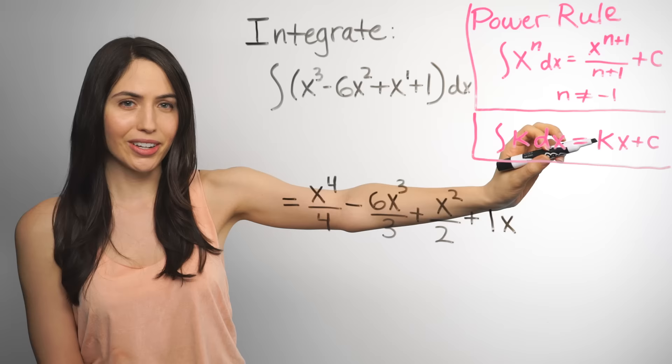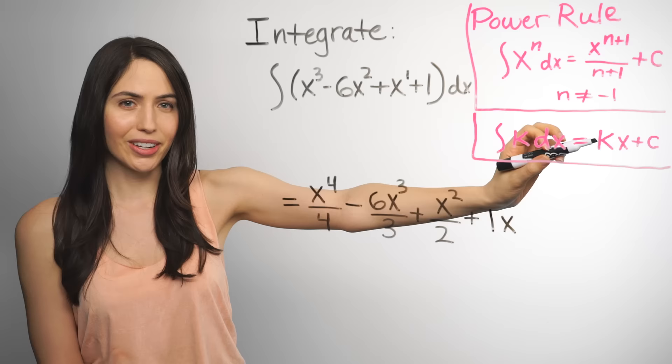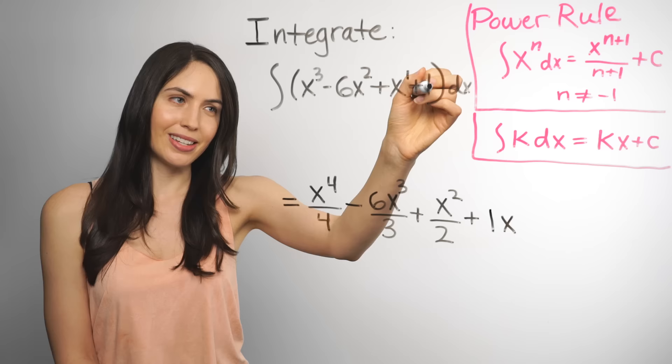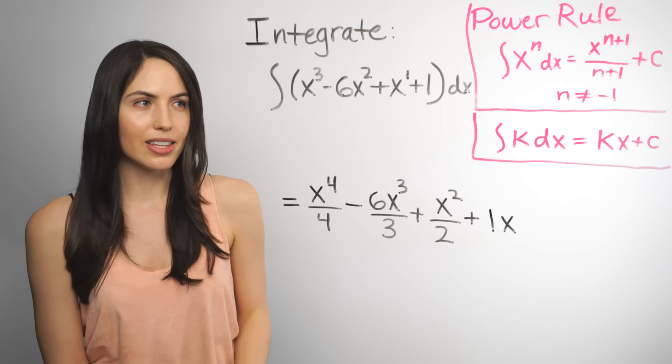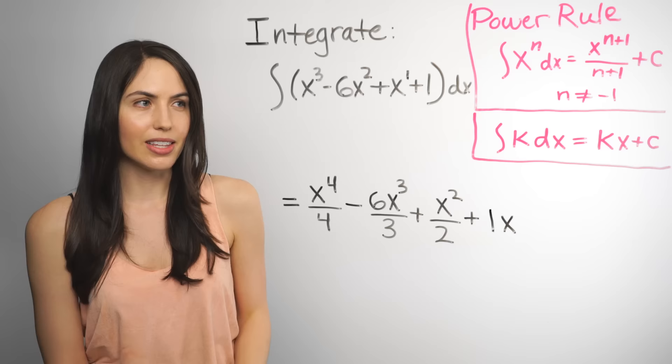And some people think of this as a separate rule, the constant rule. And other people think of it as the power rule. There is technically an invisible x to the zero power here. So if you use the power rule on x to the zero, you get x to the 1 over 1. Any way you look at it, the integral of 1 is 1 times x, or x.